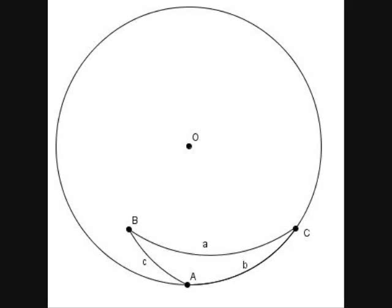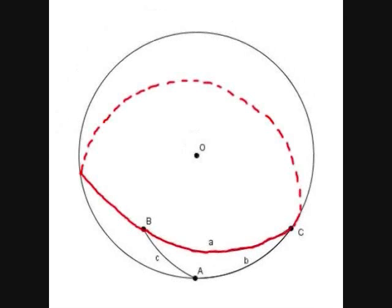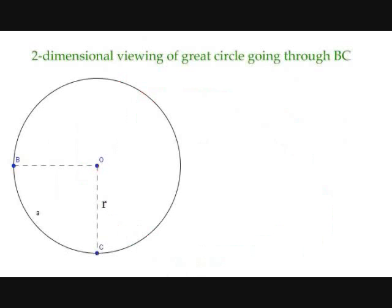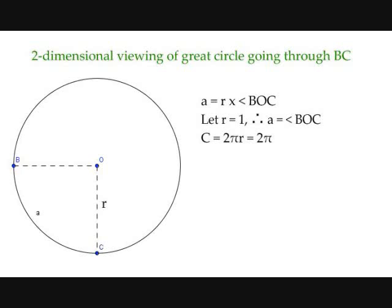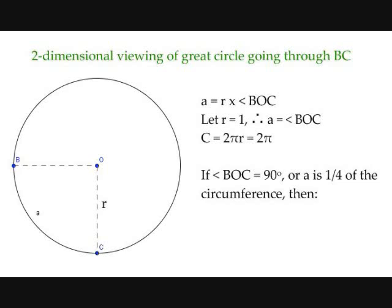We can determine the length of side A by the following method. If we construct a two-dimensional viewing of the great circle centered at O, going through points B and C while containing side A, then A is equal to R times angle BOC, where R is the radius. If we let R equal 1 to simplify matters, then A is equal to angle BOC. The circumference is equal to 2π, so if angle BOC equals 90 degrees, then A equals one-quarter times 2π, which is π/2 radians, or 90 degrees. This shows we can determine the length of any arc on a great circle.